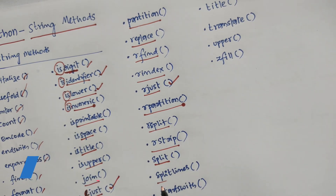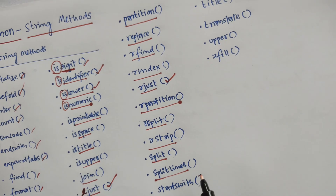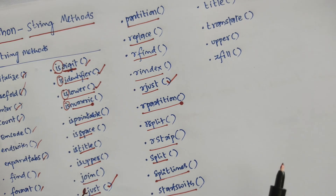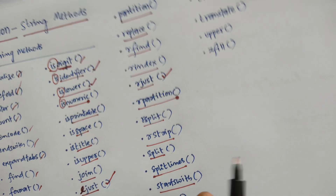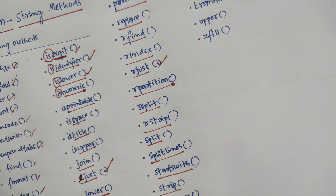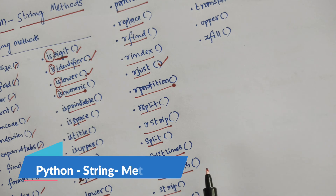Next is splitlines, which splits the string at line breaks and returns a list. Next is startswith, which returns true if the string starts with the specified value — you can check if a string starts with capital A, capital B, small b, and so on. Next is strip, which returns a trimmed version of the string. Then swapcase, which swaps the cases — lowercase becomes uppercase and vice versa.